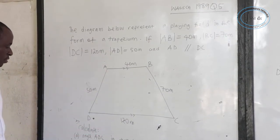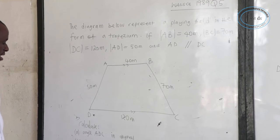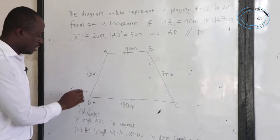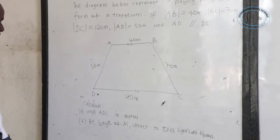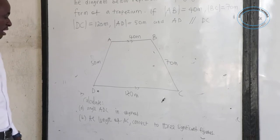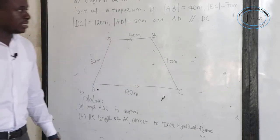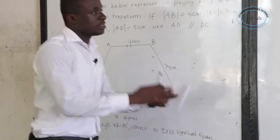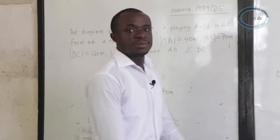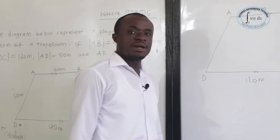We should calculate angle ADC, and then find the length of AC to three significant figures. So first, let's consider the diagram.